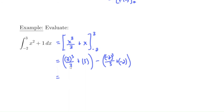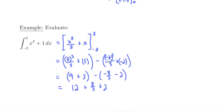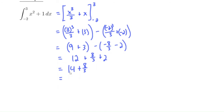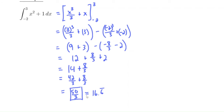Evaluating: we get 27/3 = 9, so 9 plus 3, minus (−8/3 minus 2). That gives us 12, plus 8/3, plus 2 — make sure to use parentheses. So we have 14 plus 8/3. Getting a common denominator: 42/3 plus 8/3 equals 50/3. That is the area underneath the function — the area of that blue shaded region, which is 16 and 2/3.